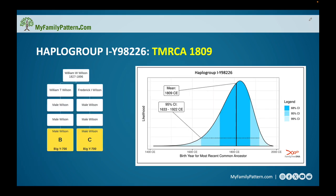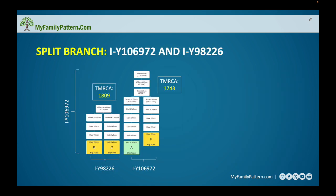Let me show you the haplogroup associated with that smaller cluster — the one descending from William W. Wilson. We knew they both descended from him because I recruited them as such. It gave a new time to most recent common ancestor for this new haplogroup, Y98226. This 1809 date puts their common ancestor born around that time, which is probably the individual who is the father of this William W. Wilson.